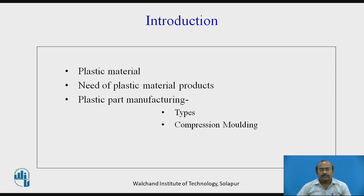Let us briefly understand the importance of plastic material, the need of plastic material for manufacturing different products, and the varieties of manufacturing methods for plastic part manufacturing. Due to the numerous advantageous properties of plastic material, nowadays it is being used as a first priority material for product manufacturing as well as replacement of material for existing products. Considering the varieties of parameters like quantity, geometry complications, and type of material being used, various plastic part manufacturing methods have been developed — one of which is compression molding.